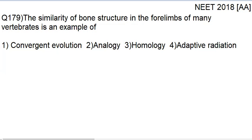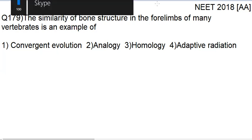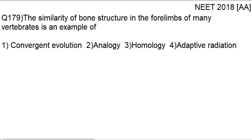Welcome back students. In this video lecture, we will be discussing question number 179 of the NEET 2018 question paper. The question reads: the similarity of the bone structure in the four limbs of many vertebrates is an example of — (1) convergent evolution, (2) analogy, (3) homology, or (4) adaptive radiation.